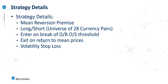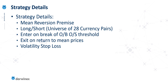In this particular strategy I was using a volatility stop loss. The purpose of this episode isn't anything to do with the mean reversion strategy per se — it's all about the analysis of the effect of noise on the trading system. I'll be covering the most noisy time frames and comparing those with the least noisy time frames. The measure I'm using here is Perry Kaufman's efficiency ratio.